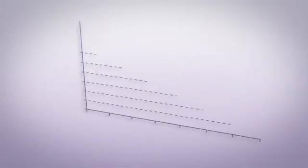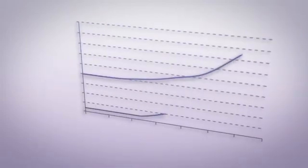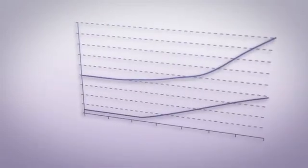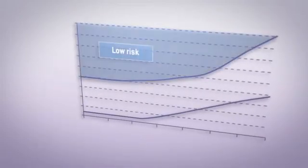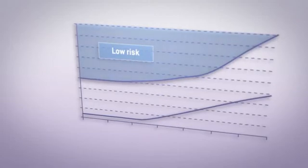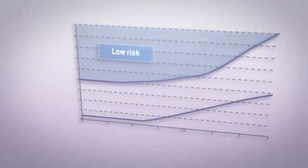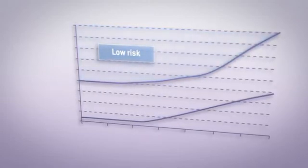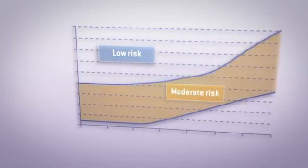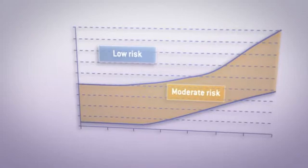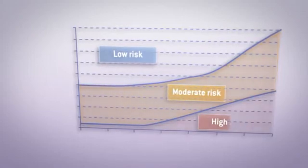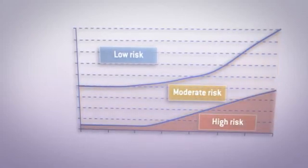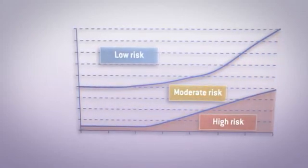The CAROC system defines three fracture risk zones. Low risk is fracture risk less than 10% over the next 10 years. Moderate risk is 10–20%, and high risk is greater than 20%.